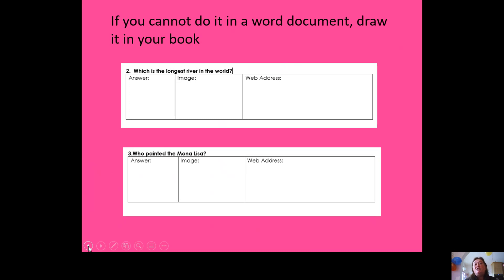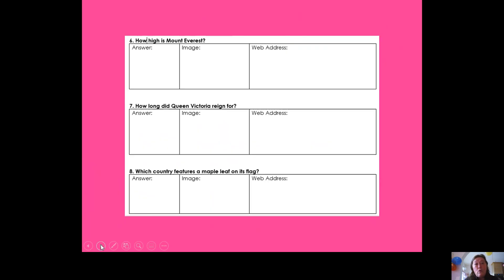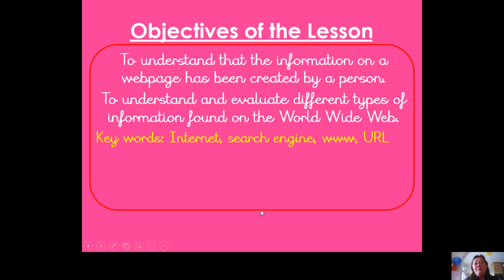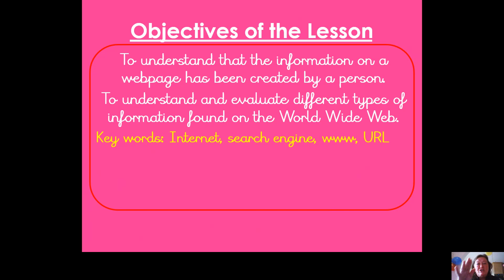You can go backwards and forwards, rewind the video to look again at these questions, and pause the screen to get things right. When you've finished all eight questions, pause the video. Make sure you are fulfilling these objectives: understanding that information on web pages is created by a person who can be fallible, so you need to check your information and evaluate the different types of information found on the World Wide Web. Use a reliable, sensible site to source information from. Well done for today — always keep at the back of your mind: who wrote this page, why were they writing it, and can I trust the information?